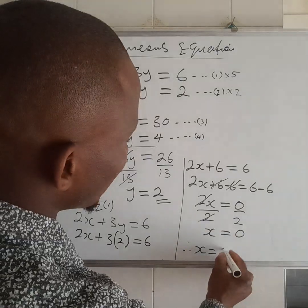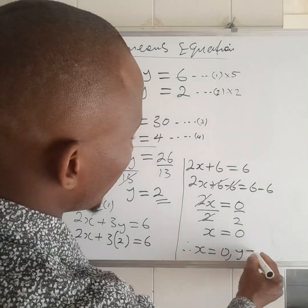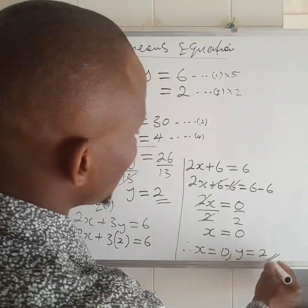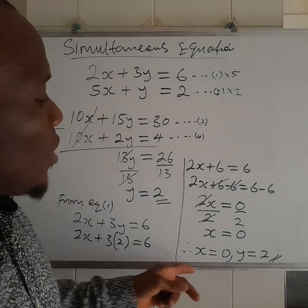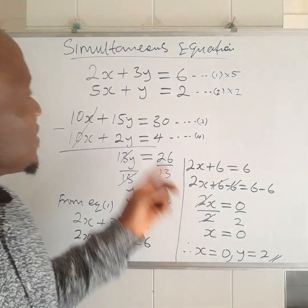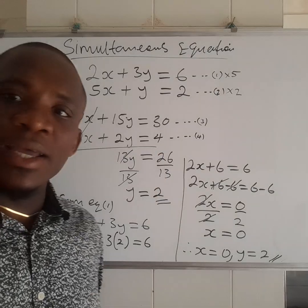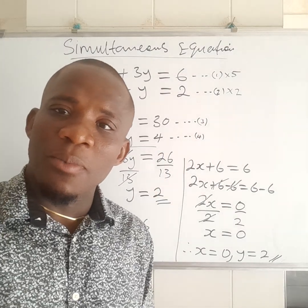Therefore, x is equal to 0, and your y is equal to 2. So, these are the values of x and y that satisfy these equations. Thanks for watching. Follow for more. Bye-bye.